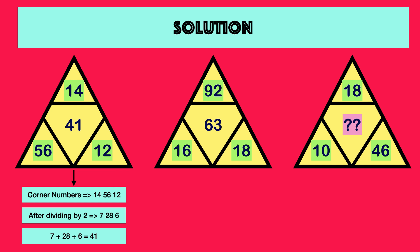In the first triangle, corner numbers are 14, 56 and 12. After dividing each number by 2, resulting numbers are 7, 28, 6. Further adding all numbers, result is 41, which is the number represented in center of triangle 1.